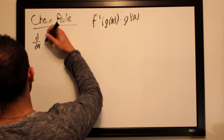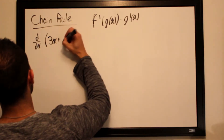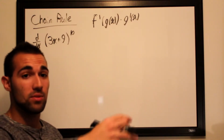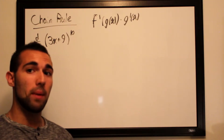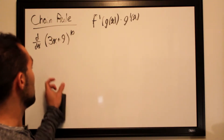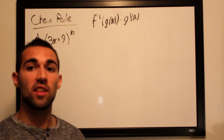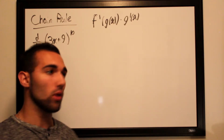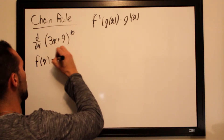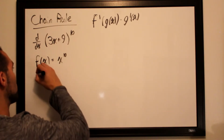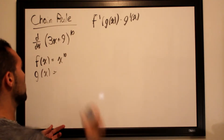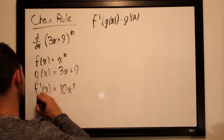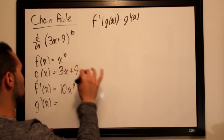We want to take the derivative of (3x + 9)^10. This would be a real pain to expand 10 times and use the power rule on each piece. Luckily the chain rule makes things easier. We can view this as 3x + 9 trapped within an x^10 function, so our outer function f(x) = x^10, inner function g(x) = 3x + 9, f'(x) = 10x^9, and g'(x) = 3.